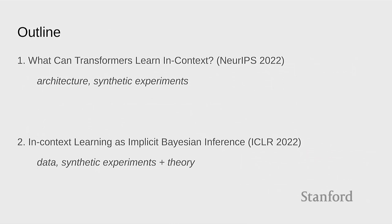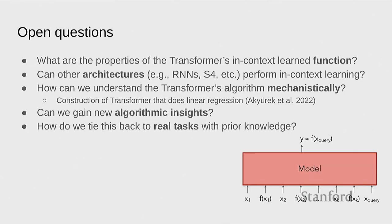Question: experiments without the positional encoding — does it still work without that? It wouldn't work because then you don't know which y goes with which x. If it's just a bag of x, y pairs, you don't. Oh, so like your x and y's are separated — they're separate tokens.